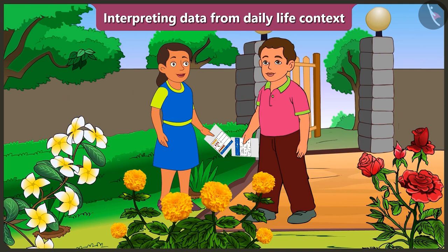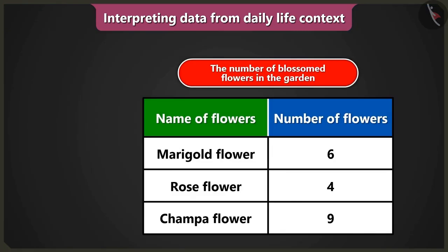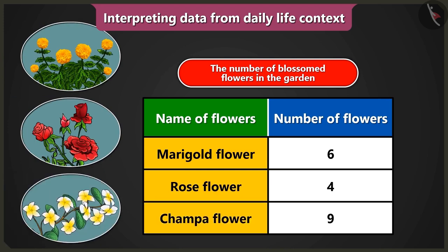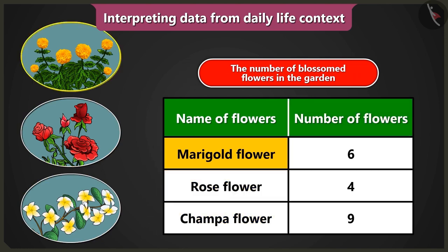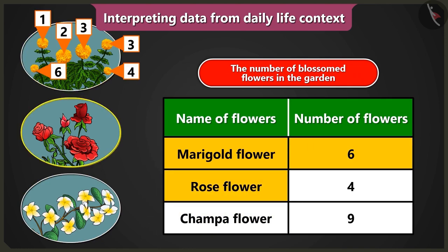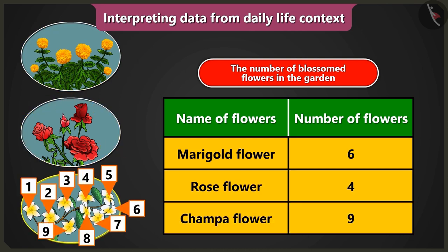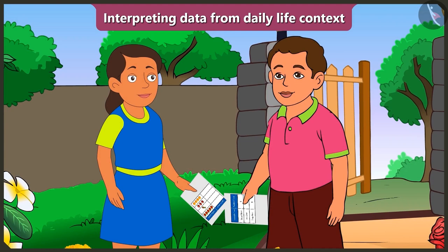This is very interesting. Now I will not have to count the flowers one by one. After understanding the table, I have understood which and how many flowers have blossomed in the garden. I understood that there are three kinds of flowers — marigold, rose, and chumpa — that have blossomed in the garden. There are six marigold flowers, four rose flowers, and nine chumpa flowers. Thank you, Bunty. You have really explained the data in the table very well.